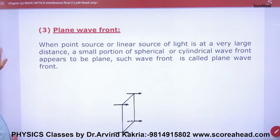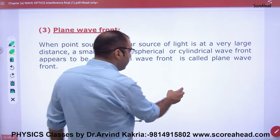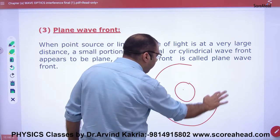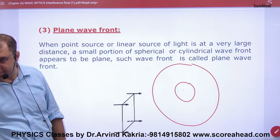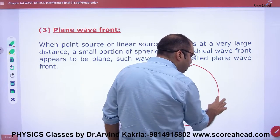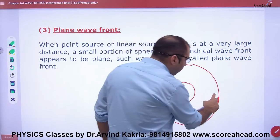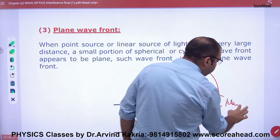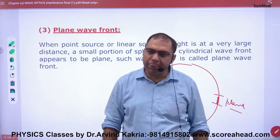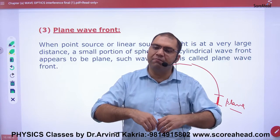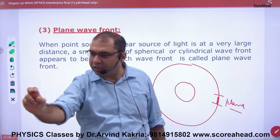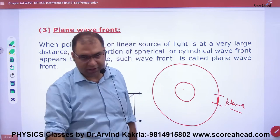Now, what is a plane wavefront? Think about it: the Sun is a point source, and light from the Sun travels in a very large sphere. But I am on Earth, and I am very small compared to that sphere. So I will see only a small part of that light. When I draw that small part, it will appear as a plane — it will be a plane wavefront. So, the plane wavefront occurs when the source is very far away.